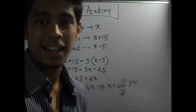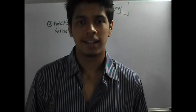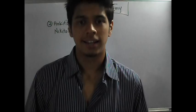Problem 2: The product of the ages of Ankit and Nikita is 240. If twice the age of Nikita is more than Ankit's age by four years, what is Nikita's age? Now for the second problem, let's assign the ages.